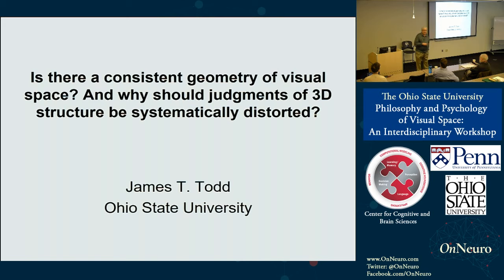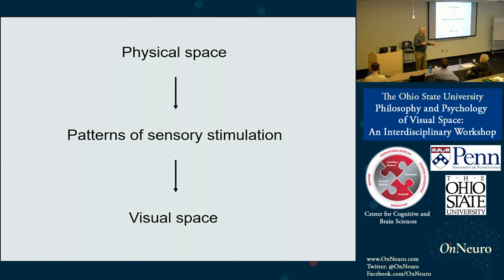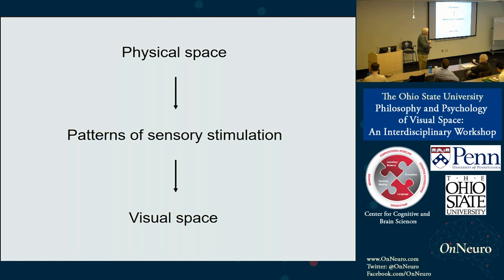In my talk today, I want to carry on some of the themes that came out in the talks yesterday. I want to start with a slide about the three domains we need to worry about if we're talking about visual perception. We have physical space — in Susanna's talk, she refers to these as mind-independent properties, the idea that there's a world separate from our phenomenal experience. There's visual space, which is our phenomenal experience.